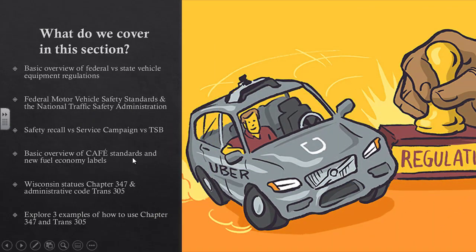So what do we cover in this section? We're going to do a basic overview of federal versus state regulations related to vehicle equipment, talk about the federal motor vehicle safety standards and the National Traffic Safety Administration, do a quick overview of the difference between a safety recall, a service campaign, and a technical service bulletin, cover the corporate average fuel economy standards and new fuel economy labels, and end with Wisconsin Statutes Chapter 347 and Administrative Code Trans 305 — very important documents for technicians in Wisconsin.